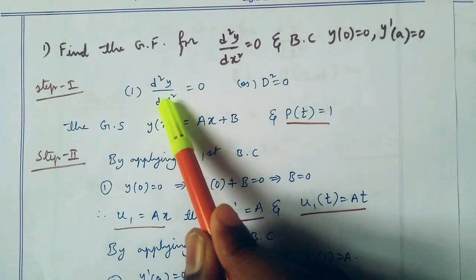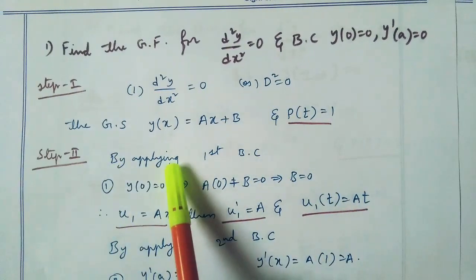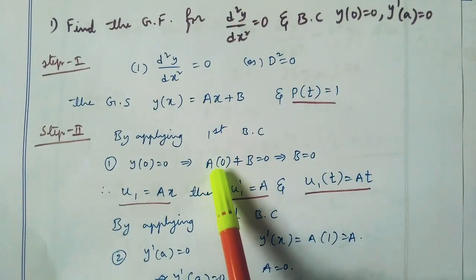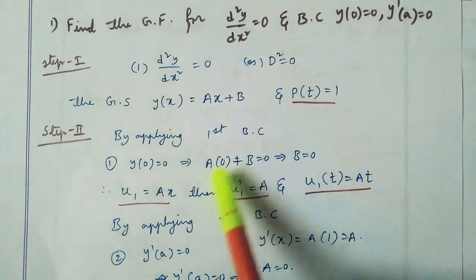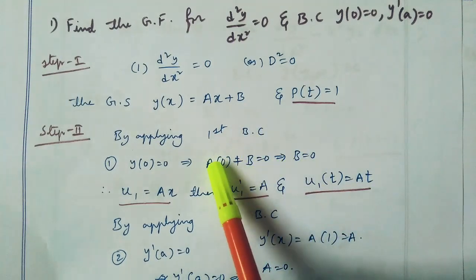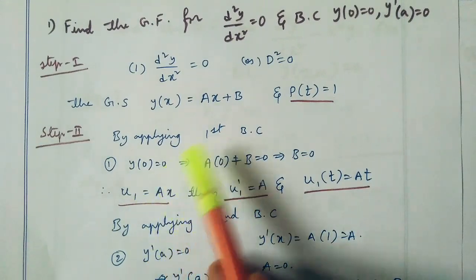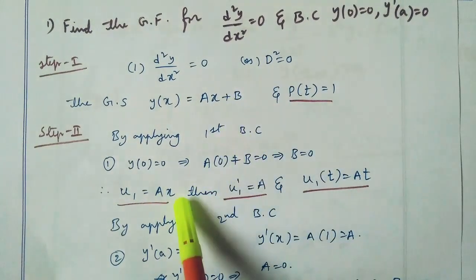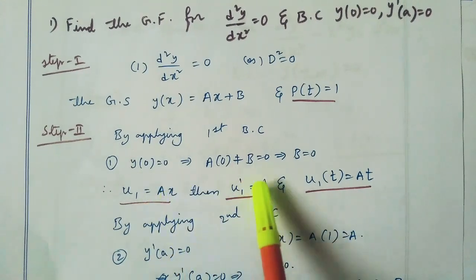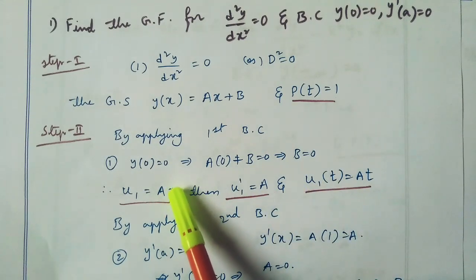The coefficient of d²y/dx² is 1, so p(t) equal to 1. Step 2: by applying the first boundary condition y(0) equal to 0, that implies a·0 plus b equal to 0, so b equal to 0. Therefore u1 equal to ax by substituting b equal to 0. Then u1 dash is equal to a, and u1(t) equal to at.